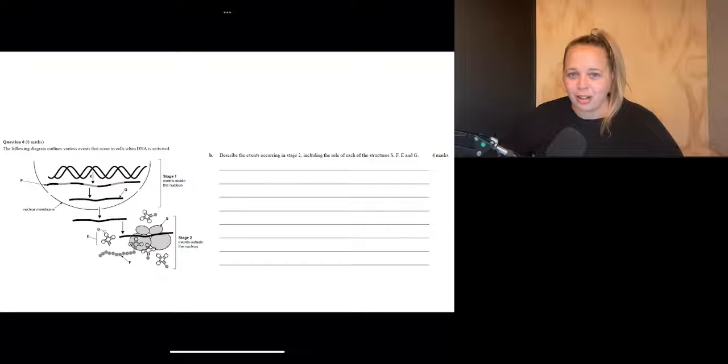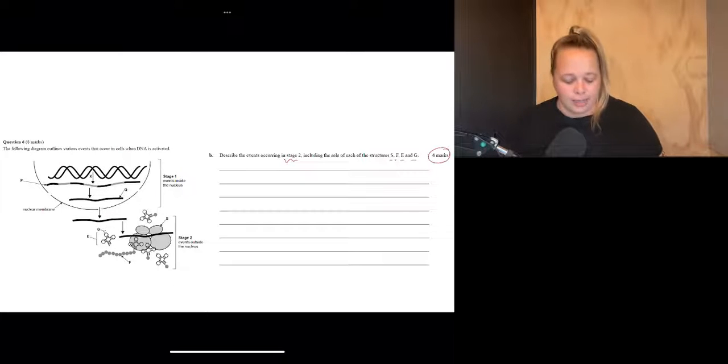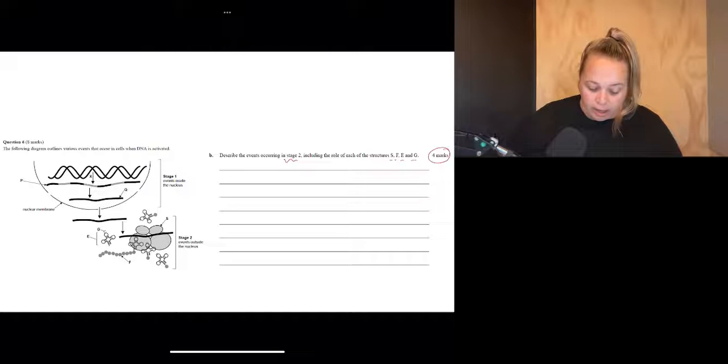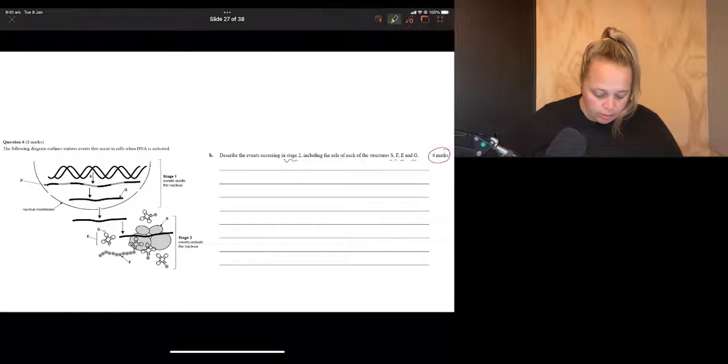So hopefully you've had a go at that question and now let's have a look at it. So it says describe the events occurring in stage two including the roles of each of the structures S, F, E and G and we're worth four marks here. So when we're worth four marks that definitely means that we need at least four points. Best thing about biology, we can use those dot points. So let's highlight those letters that we need to be talking about. So we're talking about stage two. This is events outside the nucleus.